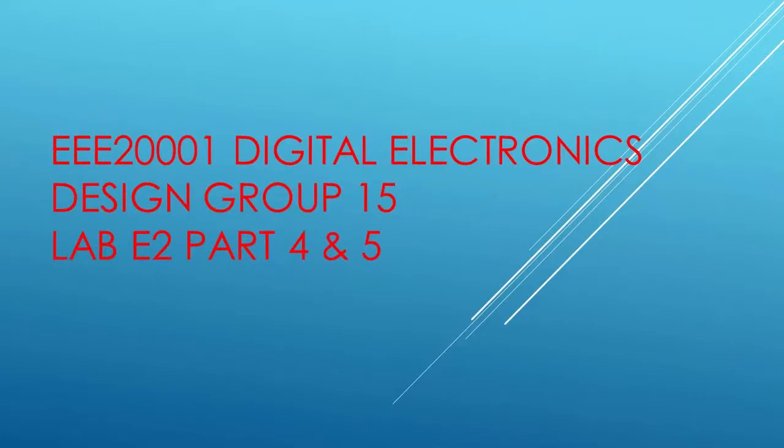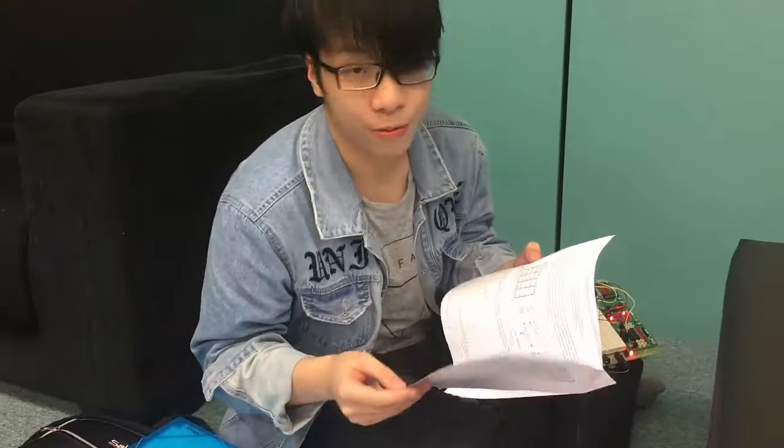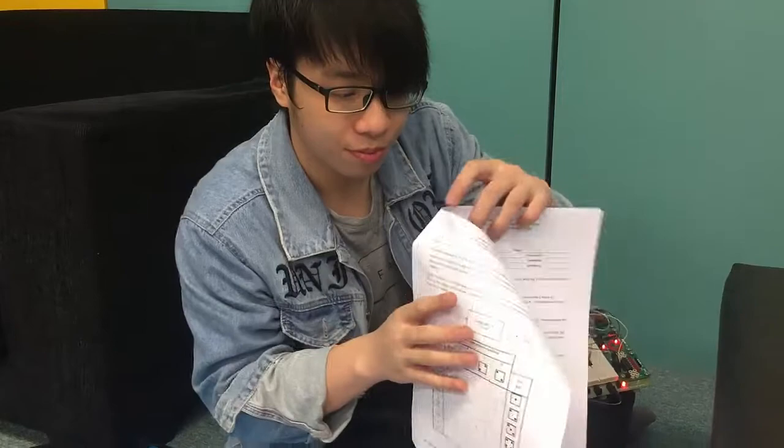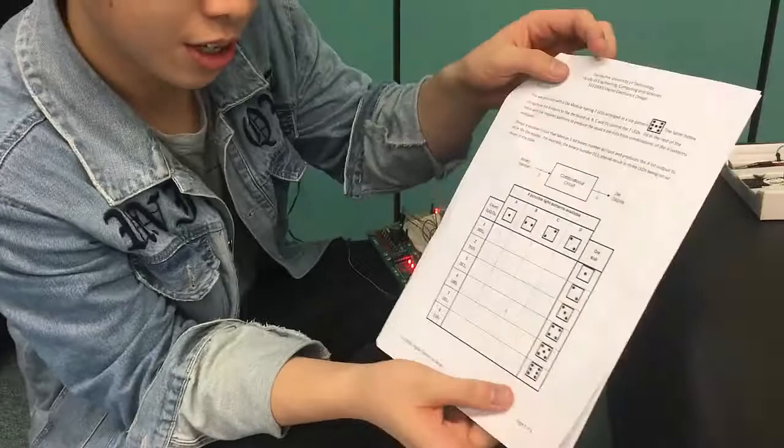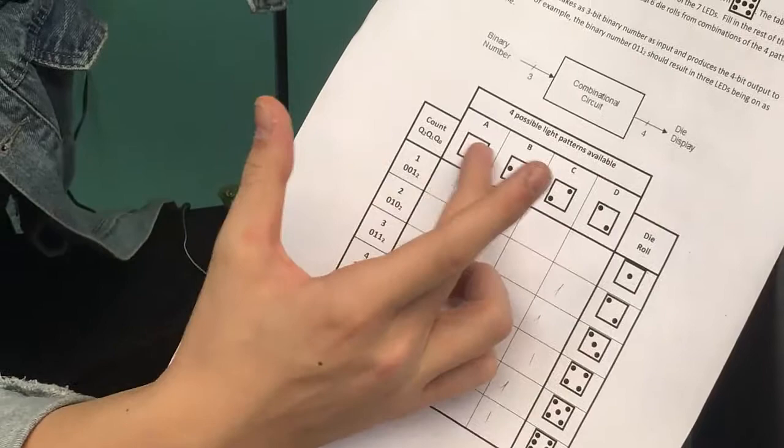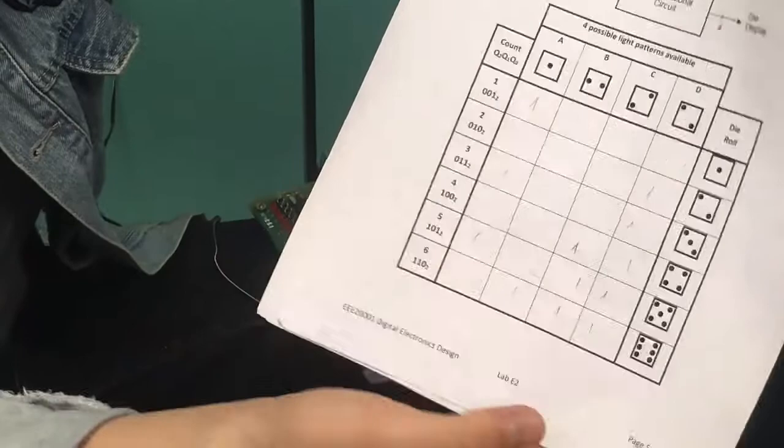Hello, it's Trent. I'll be explaining part 4 and 5 of the lab. In part 4, it's the reload logic and the schematic is the same as part 3. But then we have another logic for the appearance on the die. Based on this, we can know which number and which die light pattern will appear when it occurs at that number.